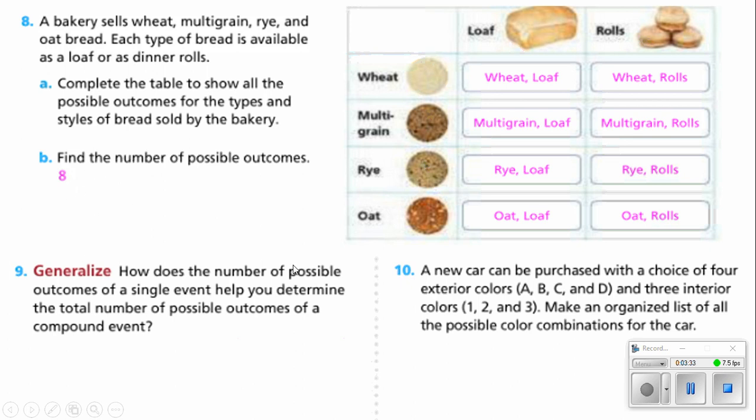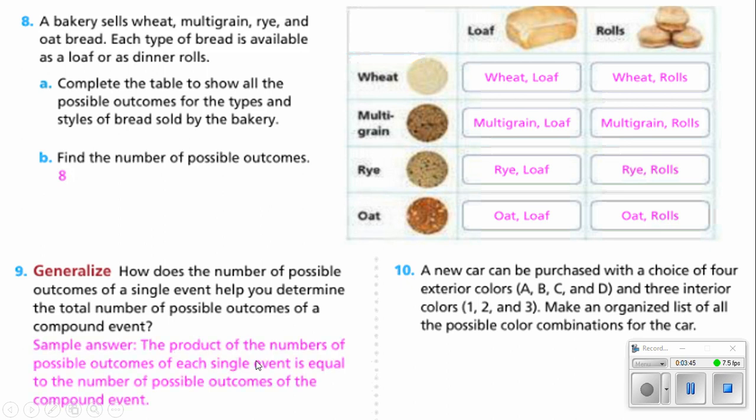Number 9 says how does the number of possible outcomes of a single event help you determine the total number of possible outcomes of a compound event? Well, that's pretty easy. The product of the numbers of possible outcomes of each single event is equal to the number of possible outcomes of the compound event.